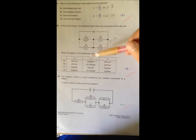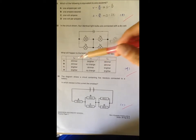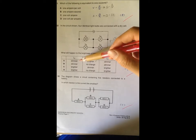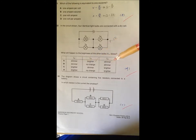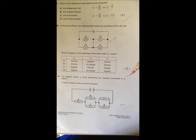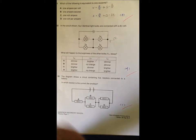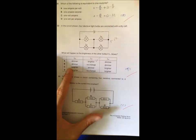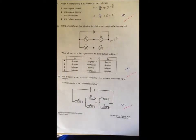Now my challenge to you is can you convince yourself mathematically that L2 and L4 will be dimmer than before, or I'll put the question another way. Why can't L2 and L4 have the same brightness as when L1 is still working? This is the first challenge.